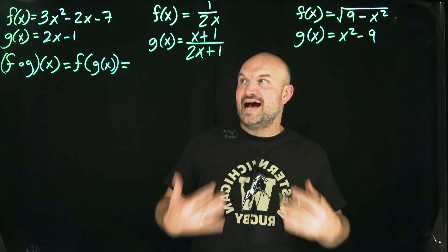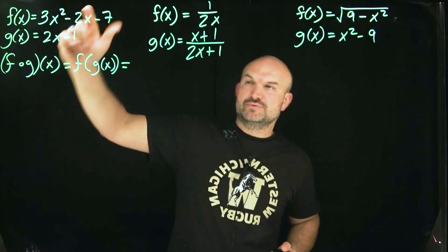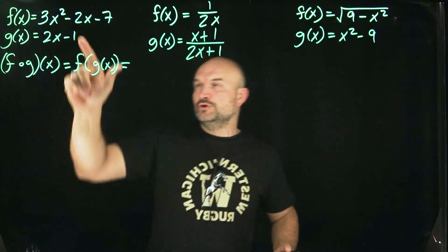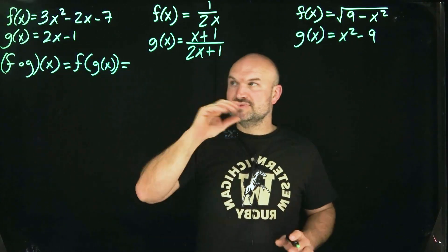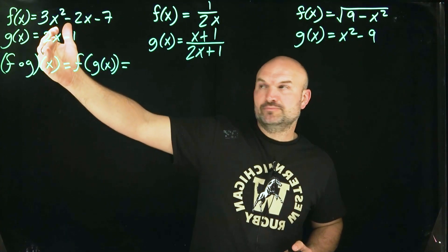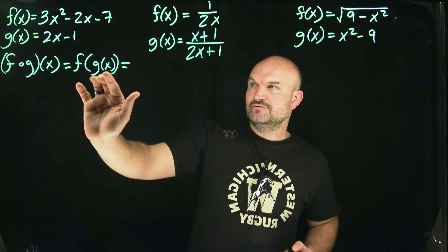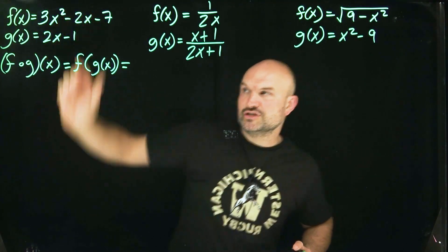Just like if I was to say f of 1, you would replace x with 1. If I said f of 0, you would replace x with 0. If I said g of 2, you would replace 2 with x. So whatever is inside your function, that is what is going to replace on your input value. So on this one here, you can see we have the binomial 2x minus 1 for g of x, and we're going to plug that into our f of x function.